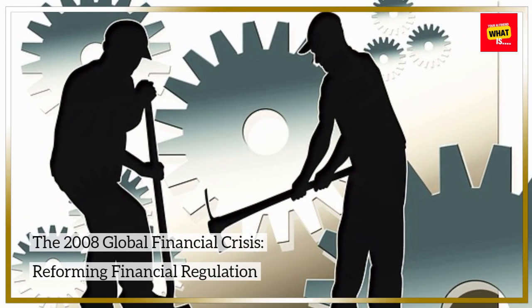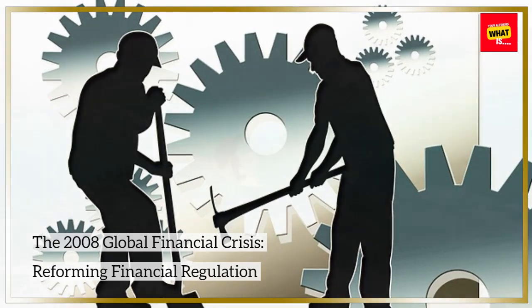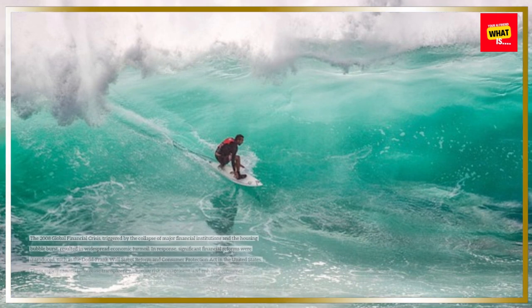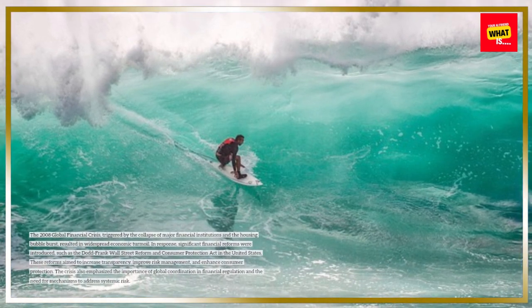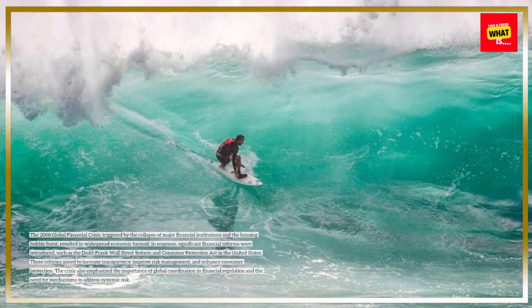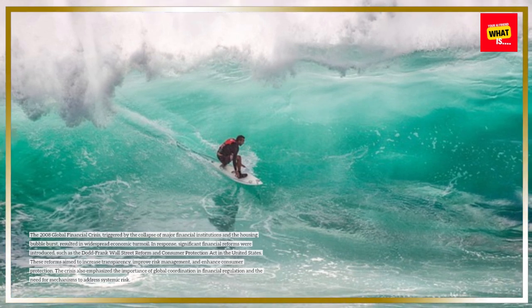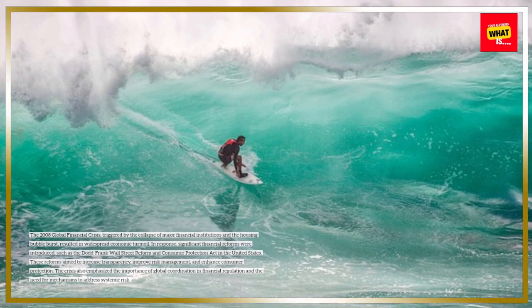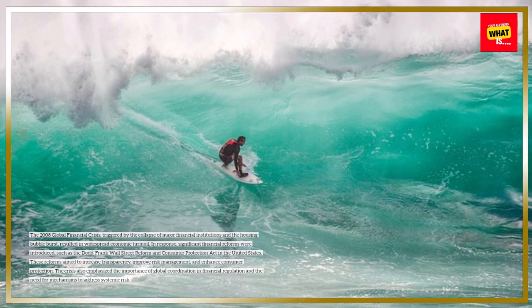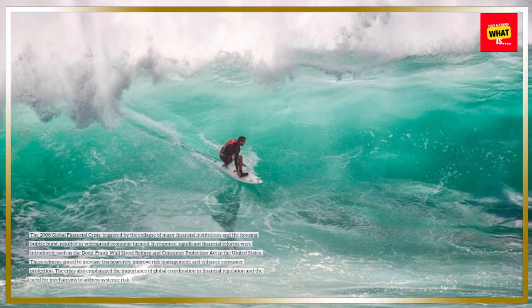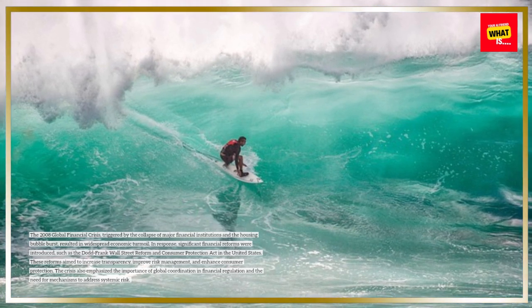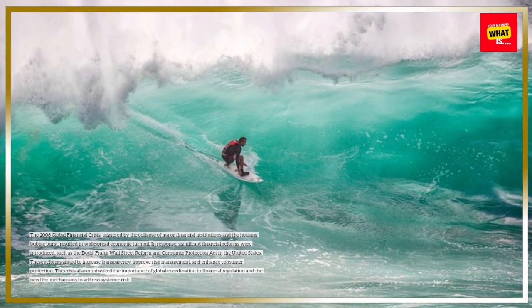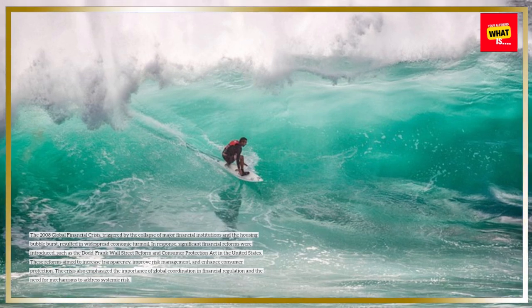The 2008 Global Financial Crisis, triggered by the collapse of major financial institutions and the housing bubble burst, resulted in widespread economic turmoil. In response, significant financial reforms were introduced, such as the Dodd-Frank Wall Street Reform and Consumer Protection Act in the United States. These reforms aimed to increase transparency, improve risk management, and enhance consumer protection. The crisis also emphasized the importance of global coordination in financial regulation and the need for mechanisms to address systemic risk.